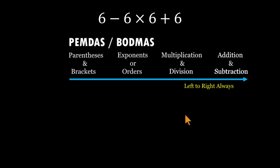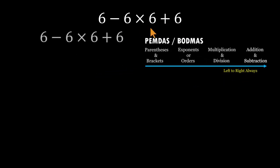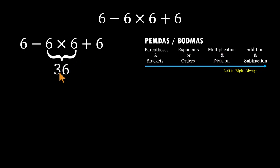Now let's solve it properly. In the expression 6 minus 6 times 6 plus 6, with no parentheses or exponents, we start with multiplication. 6 times 6 equals 36. Now the problem becomes 6 minus 36 plus 6.